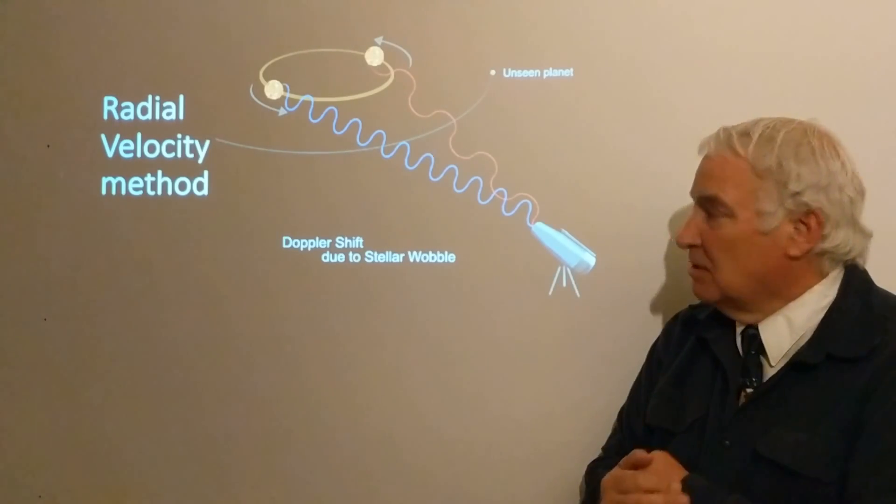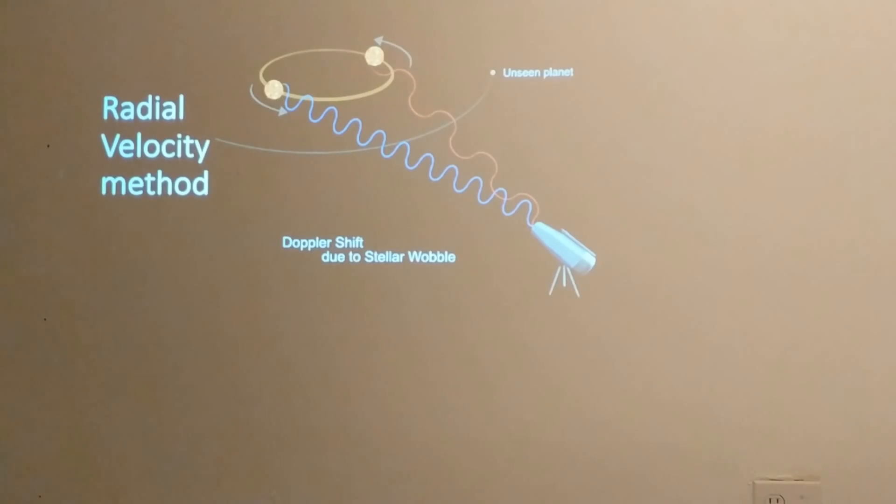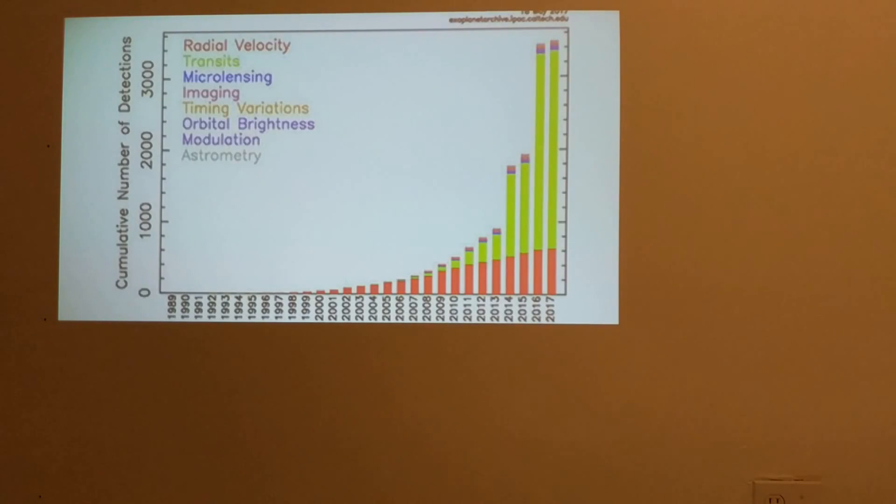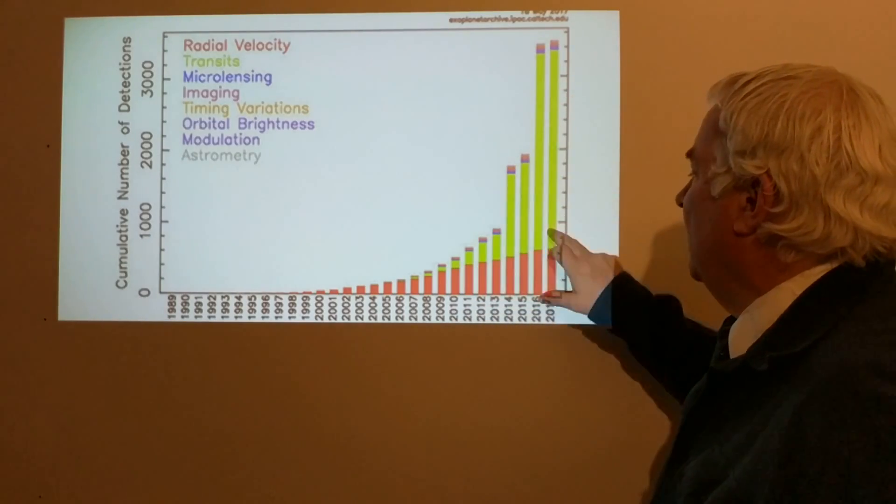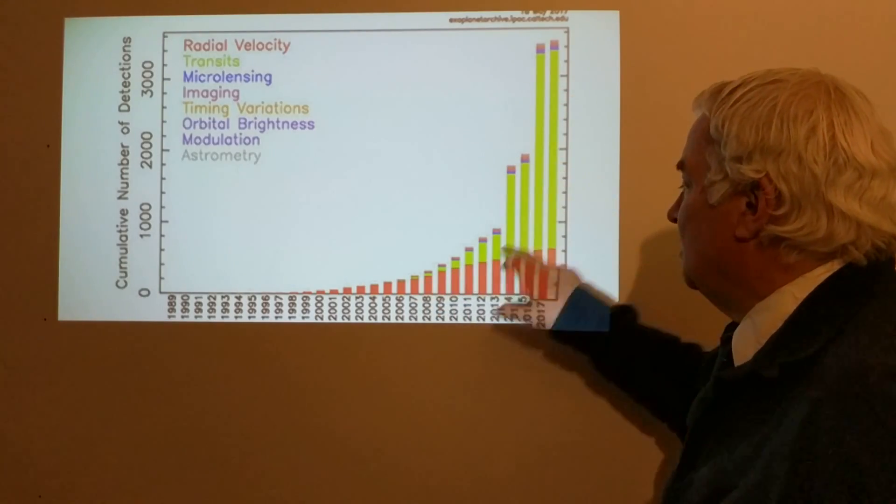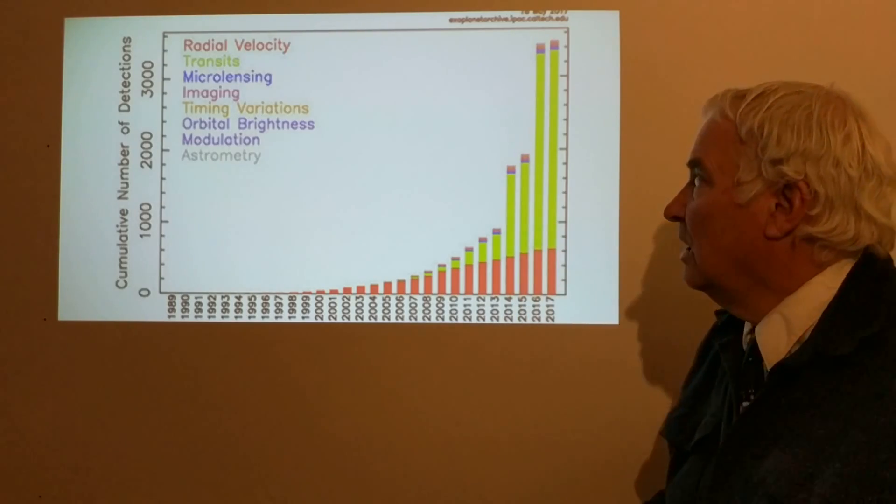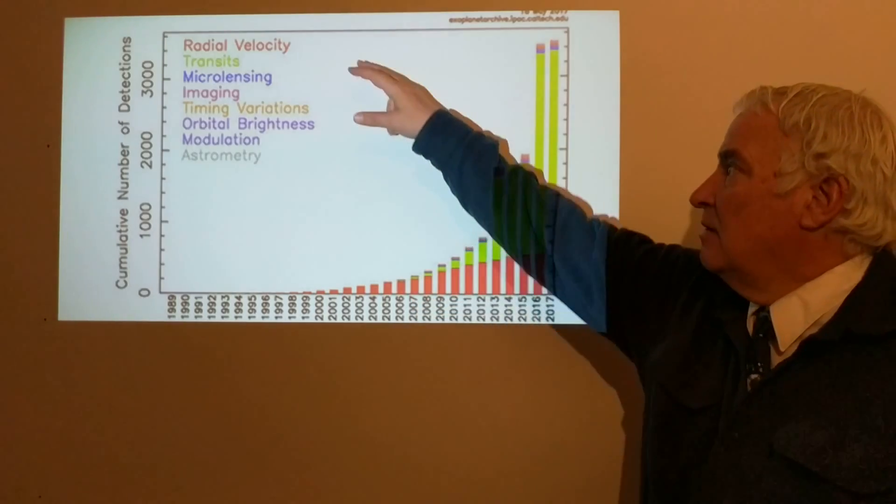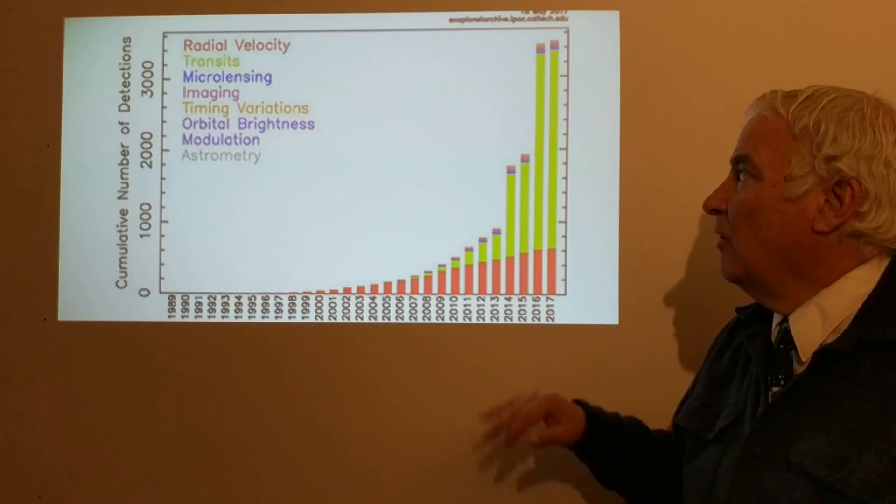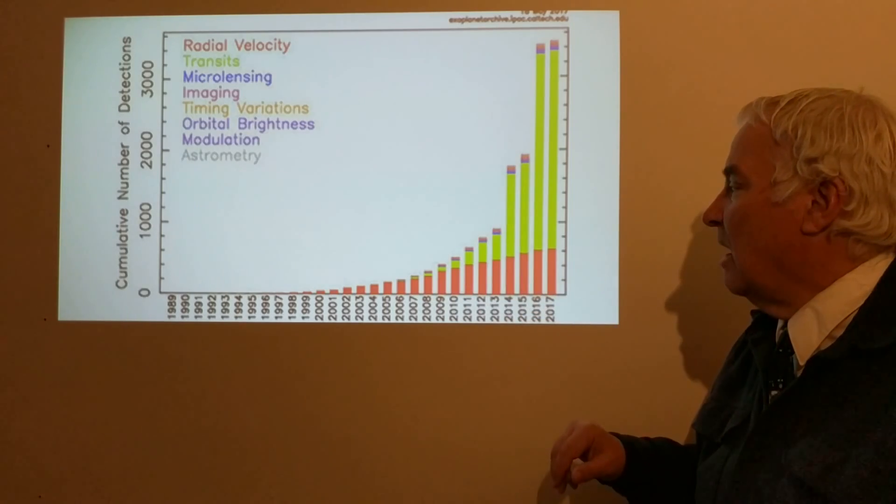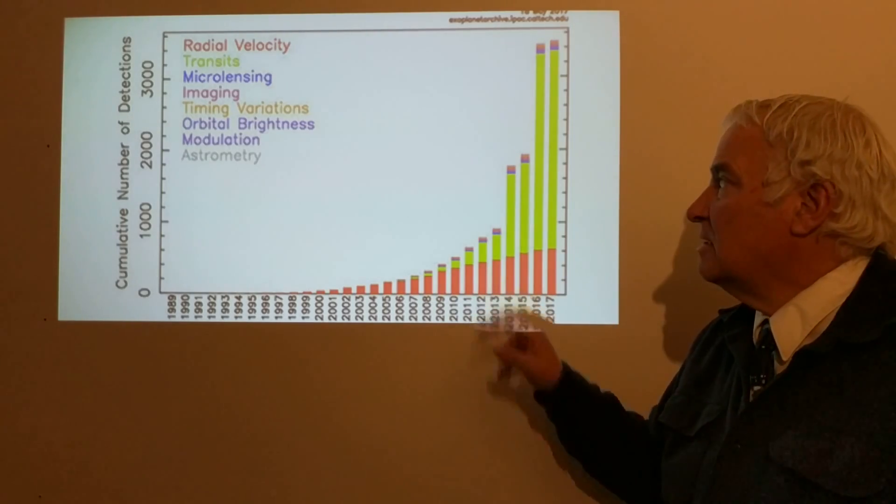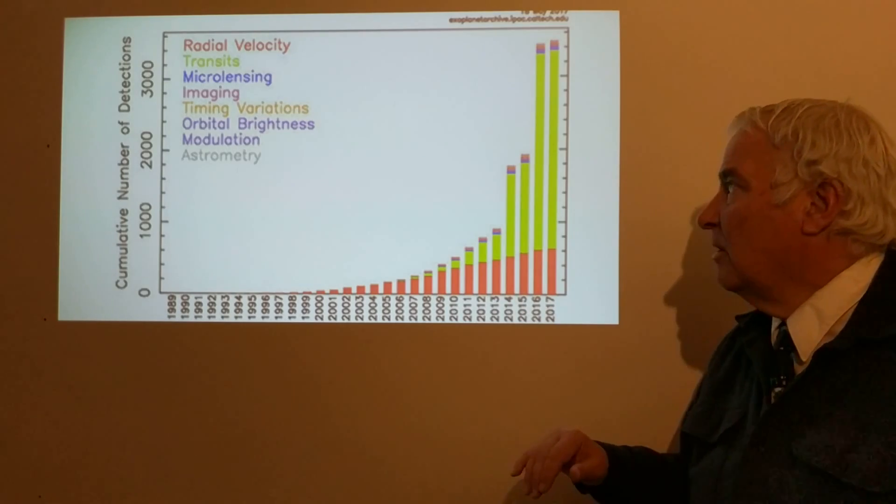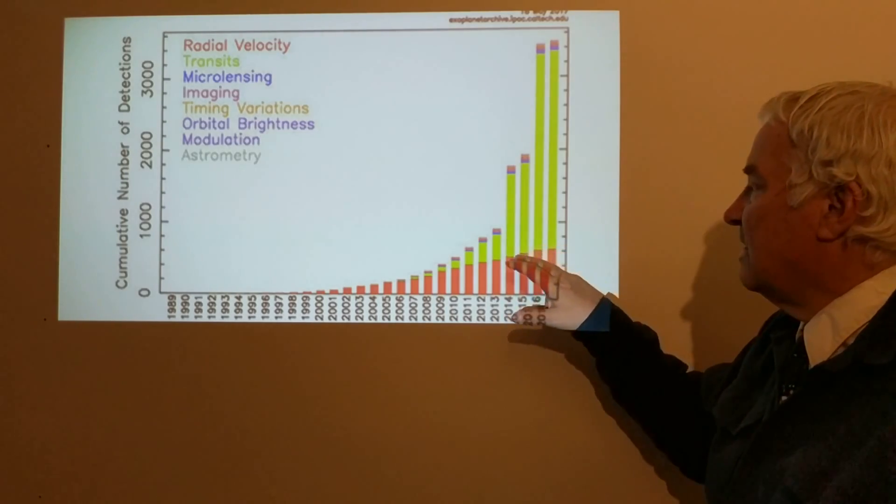The other method that accounts for the bright green ones we have here is the transit method, which has been most successful using the Kepler satellite. The HARPS observatory on the ground has done a lot of work discovering about a hundred exoplanets. The Kepler satellite has discovered thousands of exoplanets and a couple thousand exoplanet candidates as well.